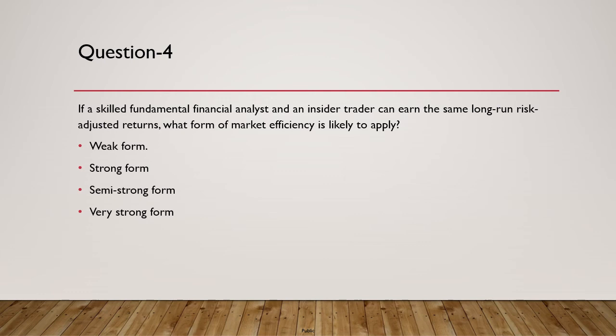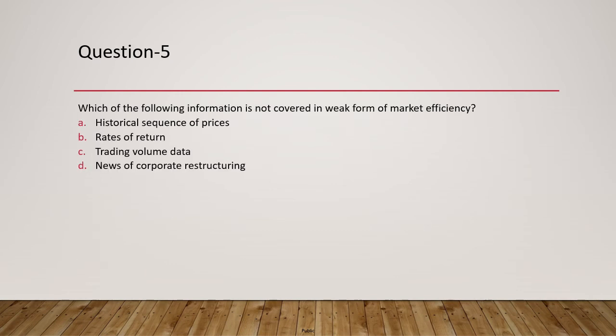Question 4: If a skilled fundamental analyst and an insider trader earn the same long-run risk-adjusted return, what form of market efficiency is likely to apply? A fundamental analyst may access information not publicly available to everyone. However, if insider and fundamental analysis yield the same returns, the semi-strong form applies. The answer is C — semi-strong form of efficiency.